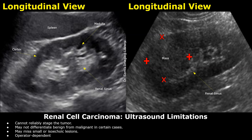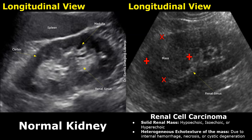Ultrasound can miss small or isoechoic masses and is highly operator dependent. We will compare the normal ultrasound appearance of a kidney with a kidney having a mass. Renal cell carcinoma cannot be confirmed on ultrasound, but it is a good first-line modality for deciding whether a CT scan is needed.